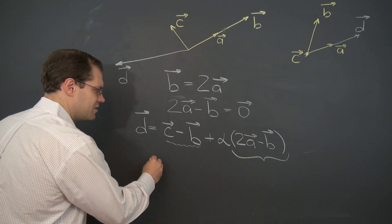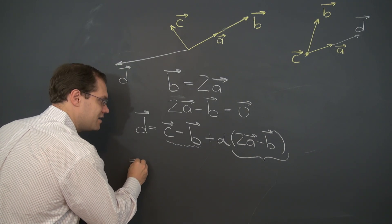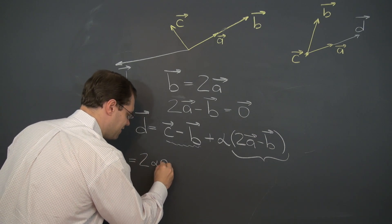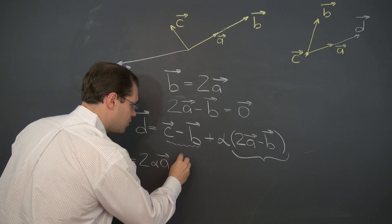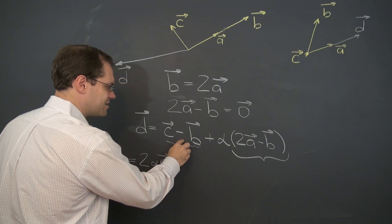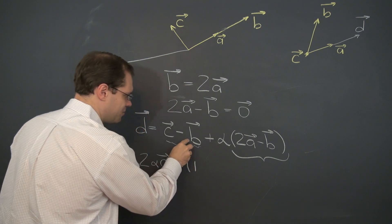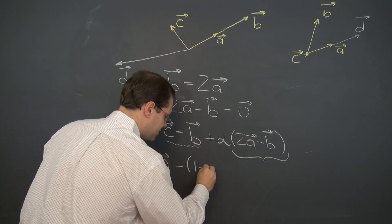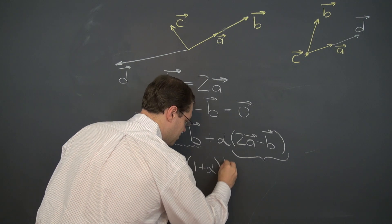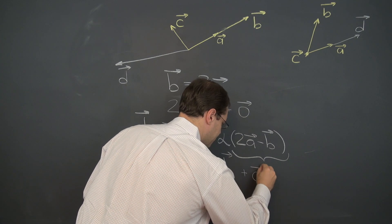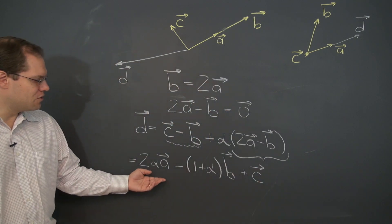So let's convert it to that form. It equals 2 alpha a minus 1 plus alpha b plus c. And here you go.